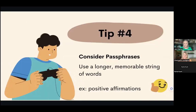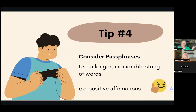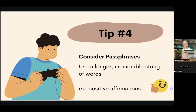Tip four: consider using a passphrase instead of a password — something a little longer or more memorable, a string of words together. One idea is to consider a positive affirmation as your passphrase. When we have to continually type this passphrase over and over, might it then be something good we want to fill our brains with — a little boost or memo to ourselves every time we're typing it?